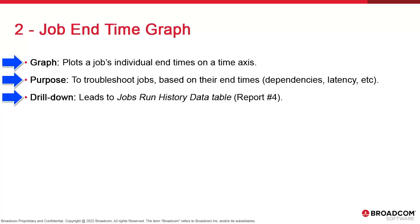The resulting table is the job run history data table, which is report number four in the list of insight templates. It shows basic data like dates and end times, as well as the type of delay causing the problem. Some delays are human and operational in nature; others are technical or by design. If you need a refresher on delay types, we recommend revisiting the AI analytics course produced in the thick client, specifically the modules on reporting.